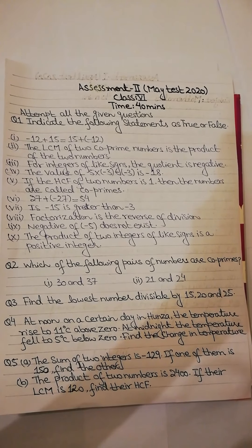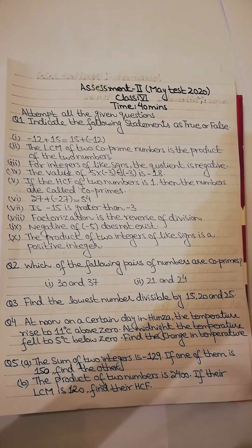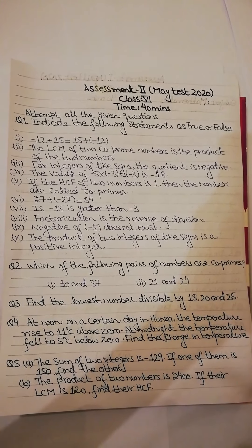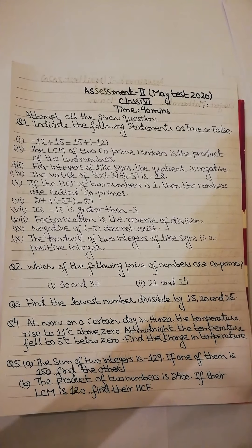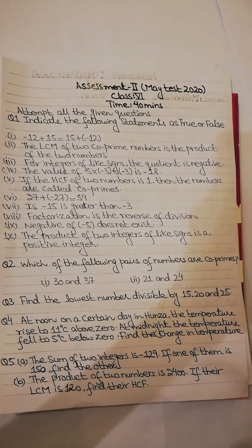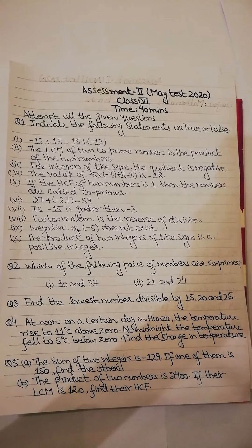Okay, next question is question number 2, which of the following pairs of numbers are co-primes. Now you have some pairs of numbers given and you have to tell which one is co-prime and which one is not. First is 30 and 37, and second is 21 and 24. All right, now question number 3 is find the lowest number divisible by 15, 20 and 25.